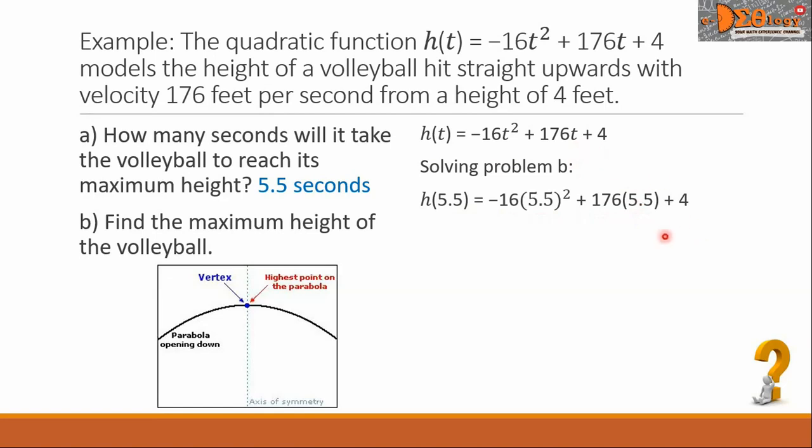Simplifying further, the square of 5.5, we will simplify that into 30.25. And then plus, we get the product of 176 and 5.5, and that is equal to 968. We simply copy the constant plus 4.